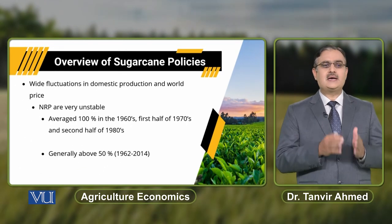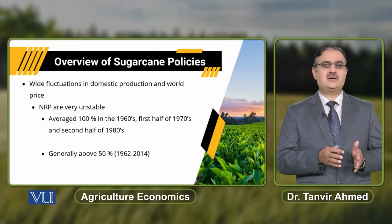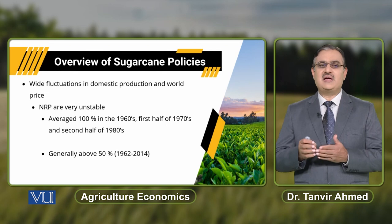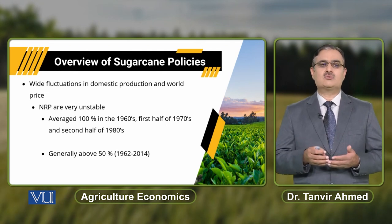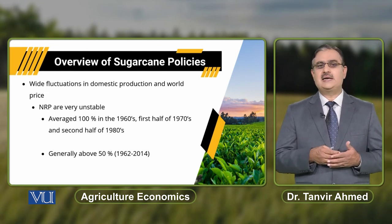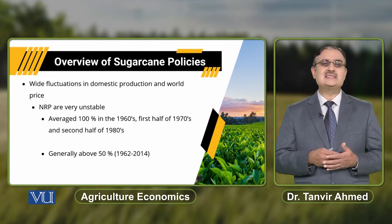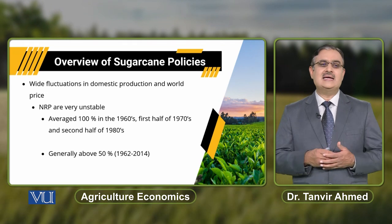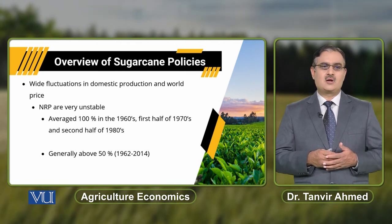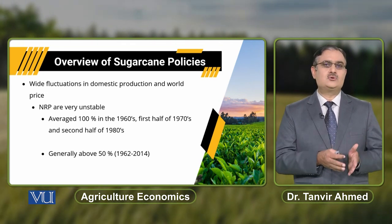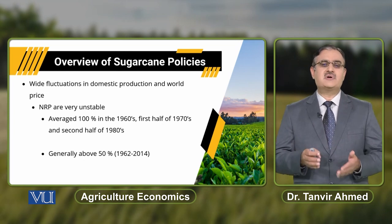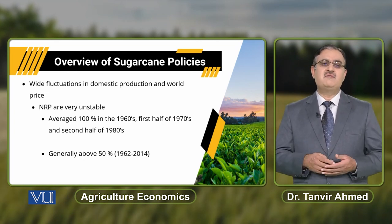In fact, we can observe wide fluctuations in domestic production and world prices. The nominal rate of protection with reference to sugarcane is very unstable. It was on average 100% in the 1960s, during the first half of the 1970s, and the second half of the 1980s. From 1962 to 2014, it was generally above 50%.